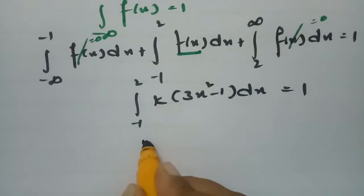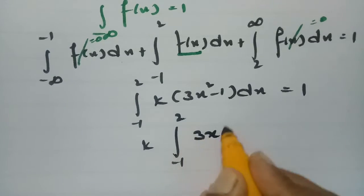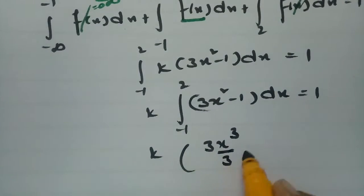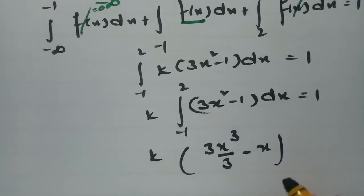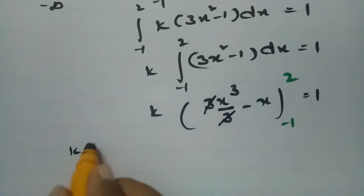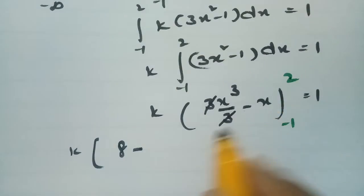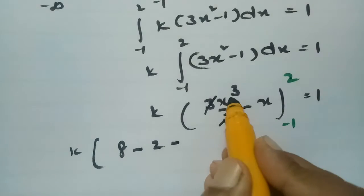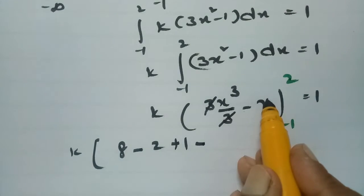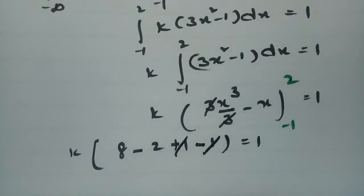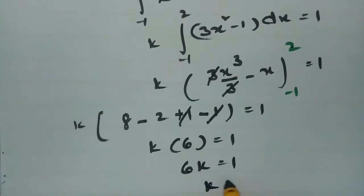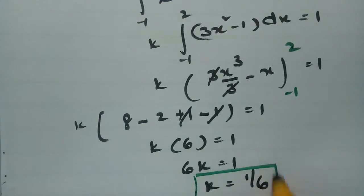We now find k. So k times the integral from -1 to 2 of (3x² - 1)dx = 1. Integrating: k times [x³ - x] evaluated from -1 to 2 = 1. Substituting the upper limit: 2³ - 2 = 8 - 2 = 6. For the lower limit: (-1)³ - (-1) = -1 + 1 = 0. So k times 6 = 1, giving k = 1/6.